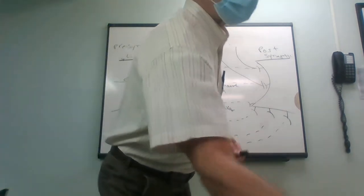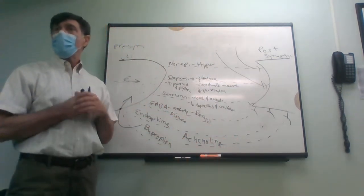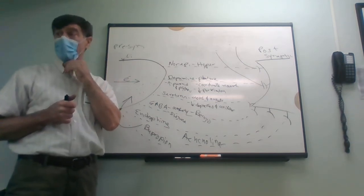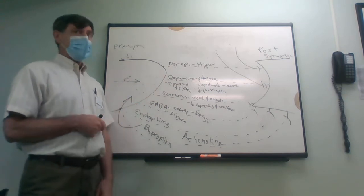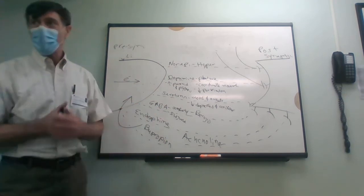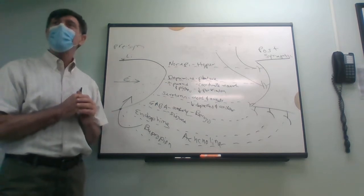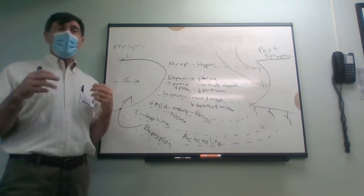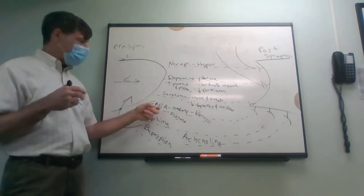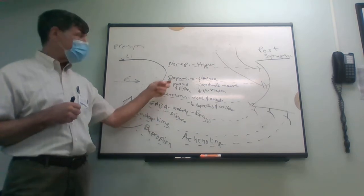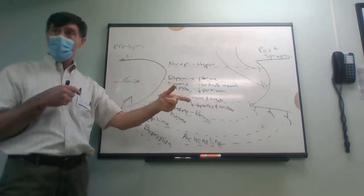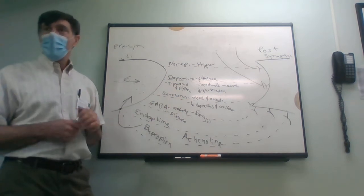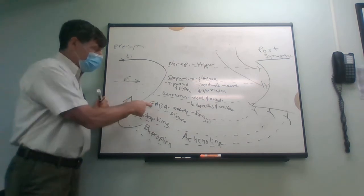Let's talk about drugs. Starting with alcohol — very common. What does alcohol do? It's sedating. What neurotransmitter does it elevate? GABA, exactly — just like benzodiazepines. When you get habituated to alcohol, your body reacts by producing less GABA and possibly producing more norepinephrine and dopamine to counteract it.